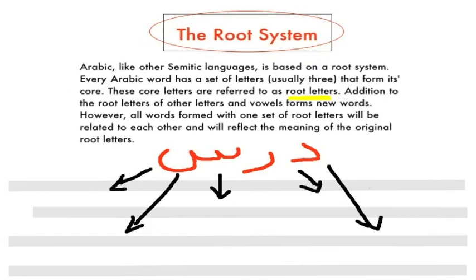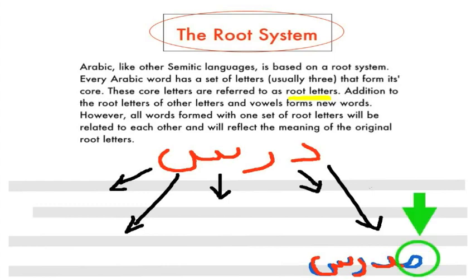We can make a lot of words from this root, but we're going to just look at five examples. The first example is the word mudarris, which means teacher. Here you can see the root letters in the word mudarris: dal, ra, sin. You can see the letter meme added to darras, which becomes mudarris.